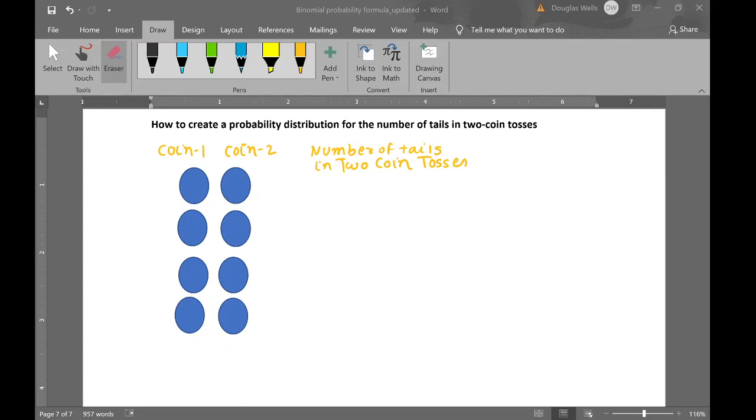How to create a probability distribution for the number of tails in two coin tosses. What that means is take two coins and toss them only once.